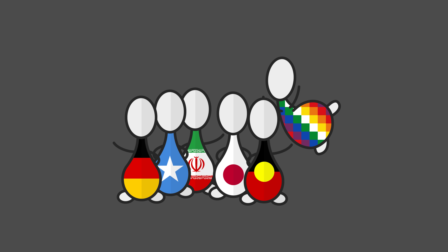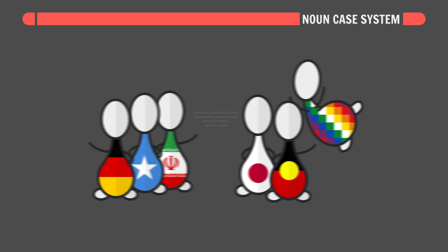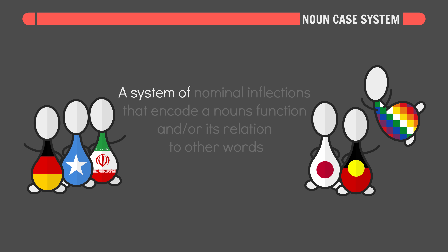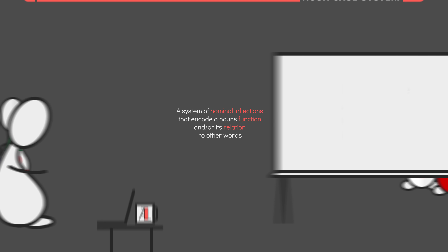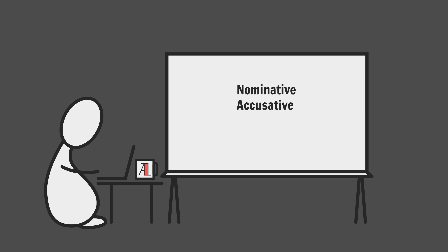Other languages make their nouns work a lot harder by employing a thing called a noun case system — a system of nominal inflections that encodes a noun's function and/or its relation to other words. The most common cases are the nominative, accusative, genitive, and dative cases.